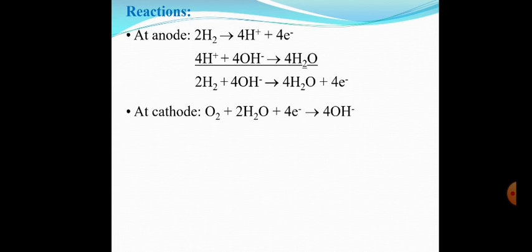At the cathode, oxygen diffusing through the electrode is adsorbed and reduces to hydroxyl ions. The reaction is: O₂ + 2H₂O + 4e⁻ → 4OH⁻. The four electrons come from the anode to the cathode.